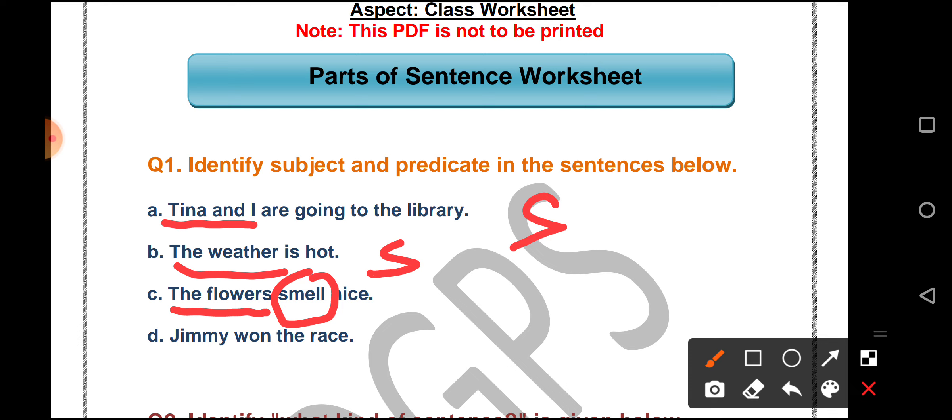Jimmy won the race. So we are talking about Jimmy in the sentence. Jimmy will be the subject and the remaining part will be the predicate.